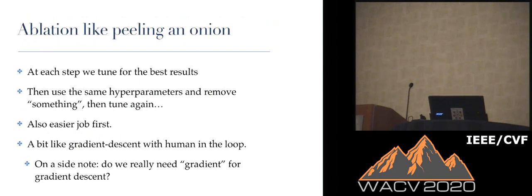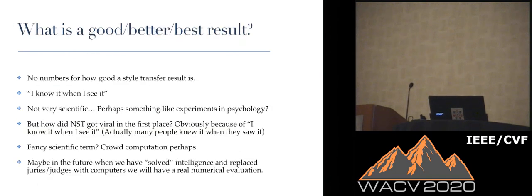The approach here is like peeling an onion. We tune the hyperparameters very hard for the best result. After we remove something, then we remove some model and tune again. Then what are good results? It is kind of I know it when I see it because you can't really score neural style transfer results. But in retrospect, this was exactly how things like neural style transfer got popular in the first place. Many people just saw it and knew it.